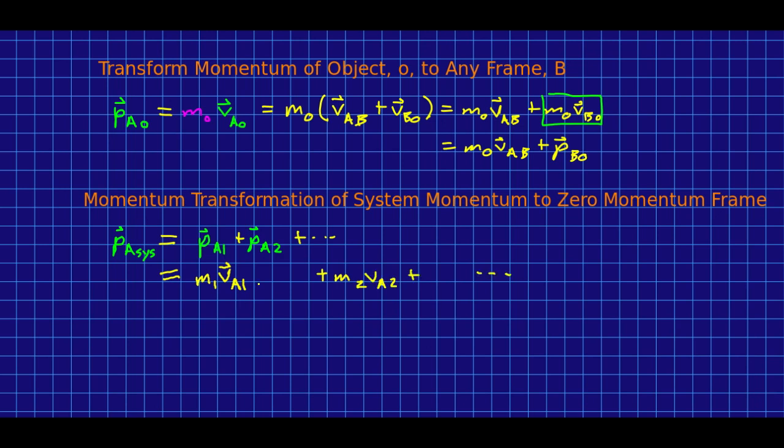And so, each of those will be of this form. And so, again, we can use the momentum transform equation to transform each one of those into the zero momentum frame. Now, if I just collect terms.